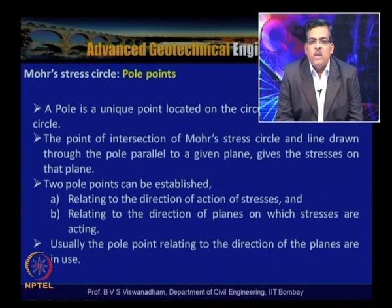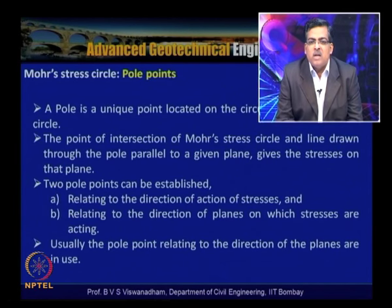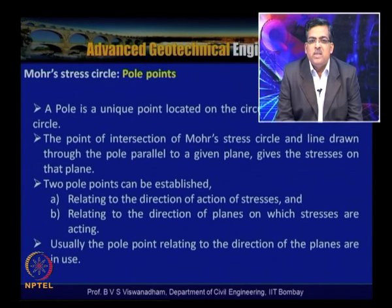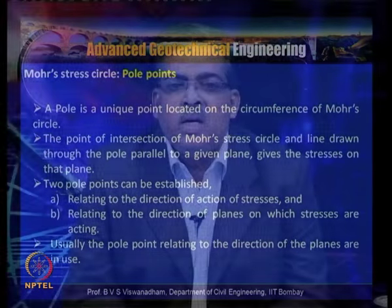There are two ways the pole point can be established. One is by relating to the direction of the planes on which the stresses are acting. If there is a normal stress acting on a horizontal plane, we refer to that horizontal plane; if there is a normal stress on a vertical plane, we refer to the direction of that vertical plane. The pole point relating to the direction of the planes — whether horizontal or vertical — is commonly used.